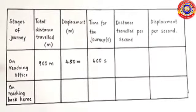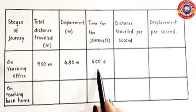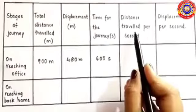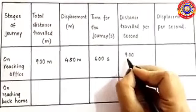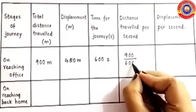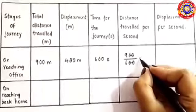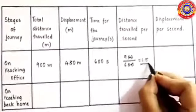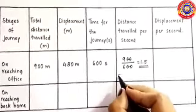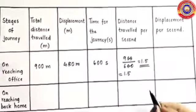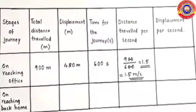The time for the journey is 600 seconds. He travelled 900 metres in 600 seconds. The distance travelled per second — that is, distance in one second — is 900 divided by 600, which gives 1.5. Since we divided distance by time, the unit is metres per second. So the answer is 1.5 metres per second.